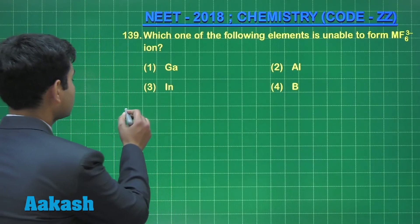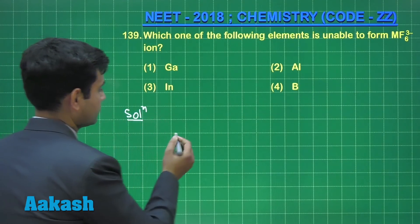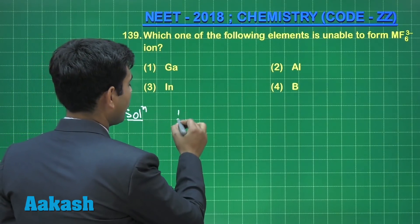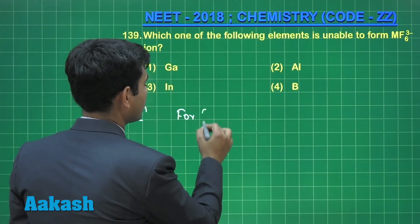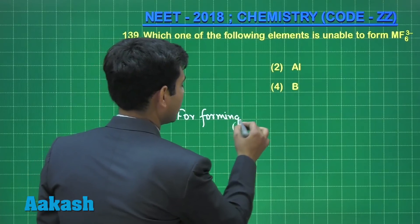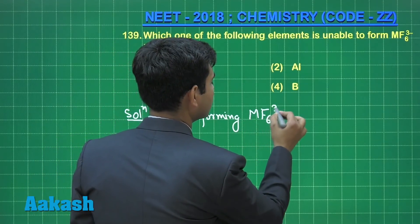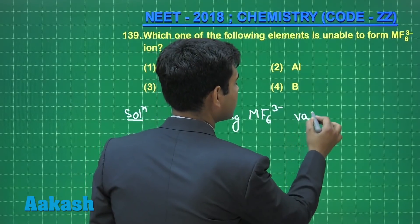So let us write its solution. For forming MF6³⁻, vacant d orbitals are required.